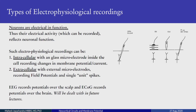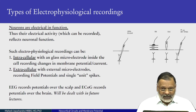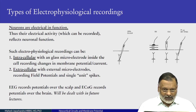Neurons are electrical in function, that is what we have gathered so far. And thus, the electrical activity, if you can record it, it reflects neuronal function. Now, there are different types of electrophysiological recordings.